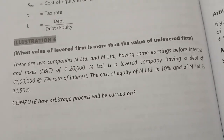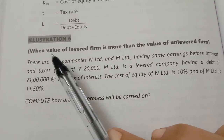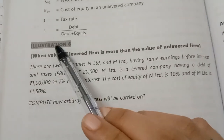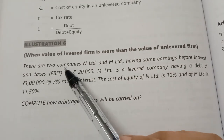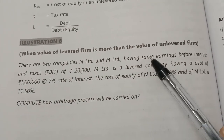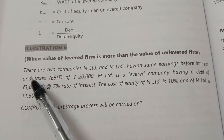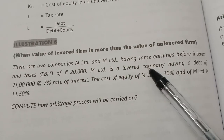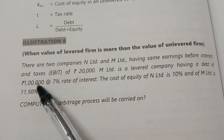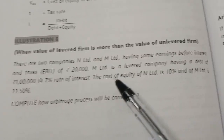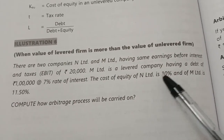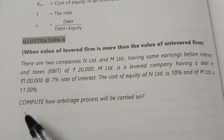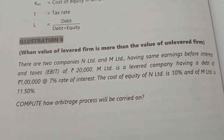Let's see how the arbitrage process will be carried out when the value of the levered firm is more than the value of the unlevered firm. Illustration 6: There are two companies, N Limited and M Limited, having the same earnings before interest and taxes (EBIT) of 20,000. M Limited is a levered company having debt of 1 lakh at 7% rate of interest. The cost of equity of N Limited is 10% and that of M Limited is 11.5%. We need to compute how the arbitrage process will be carried on.